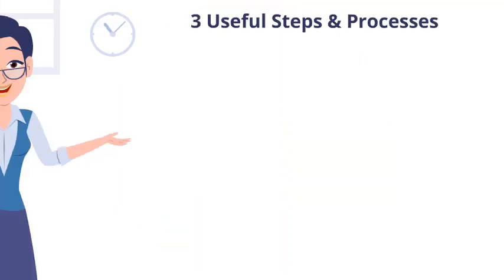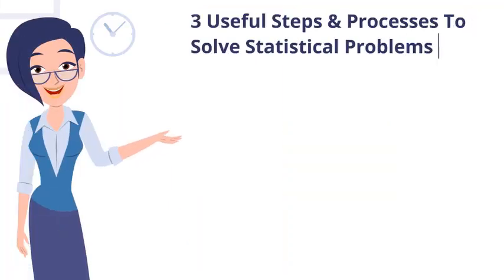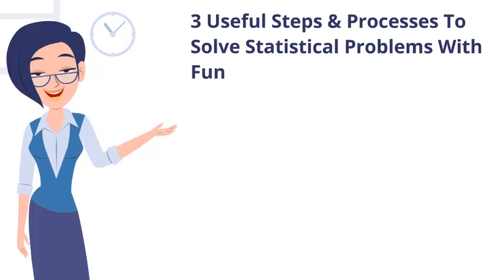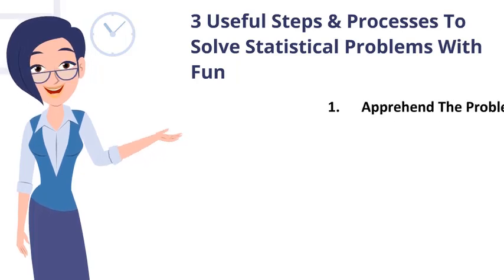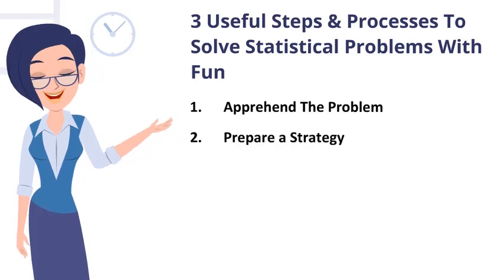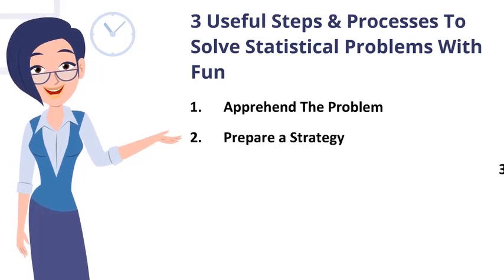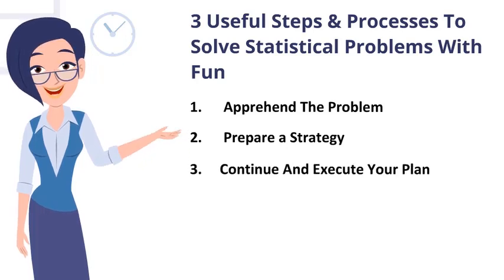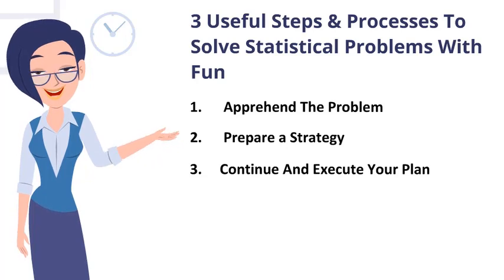Our statistics experts support all those students who are struggling to find time for solving statistics questions. Here are three useful steps and processes to solve statistical problems with fun. Step one: Apprehend the problem. First, understand the problem and what is being asked of you. If you cannot apprehend the root of the problem, you may go in the wrong direction to solve it. Step two: Prepare a strategy. Once you reach the core of the problem, prepare a strategy in your mind for how you will reach the end.